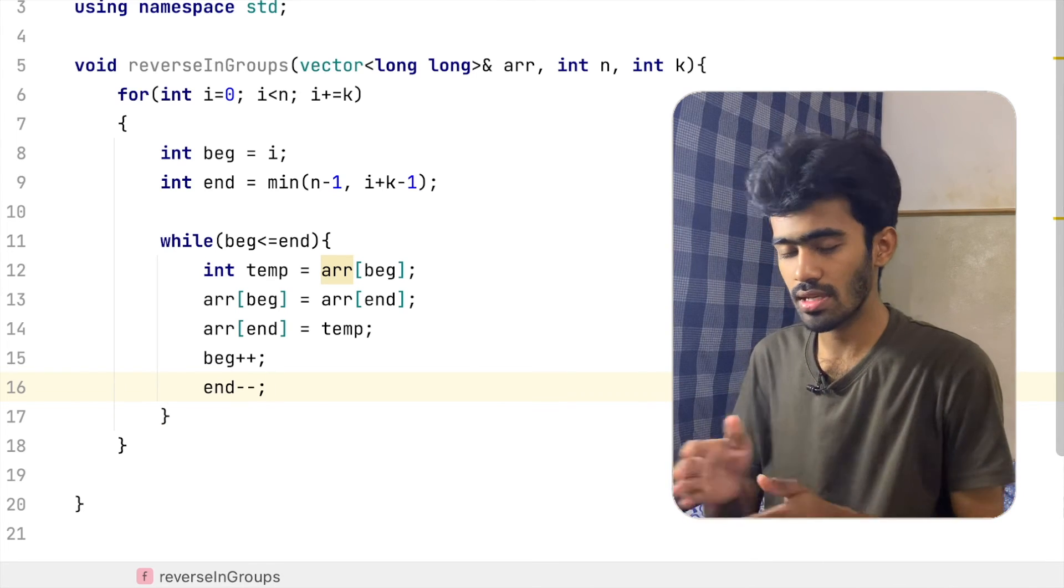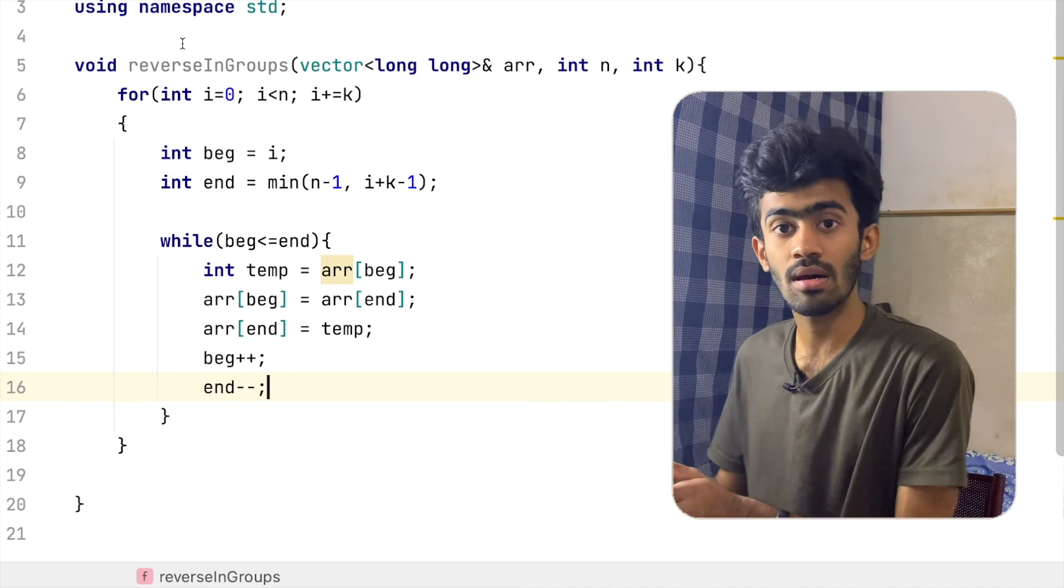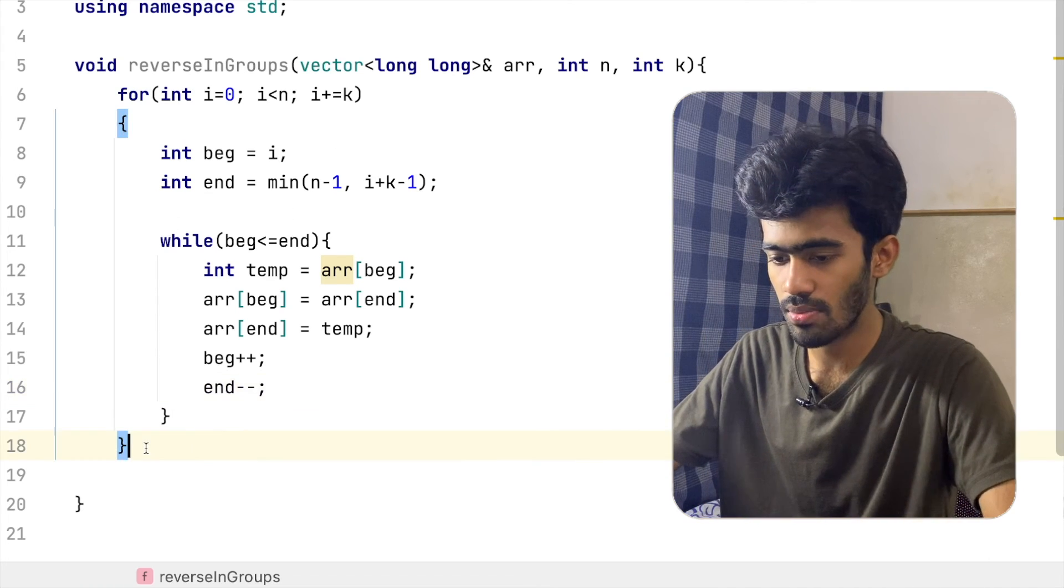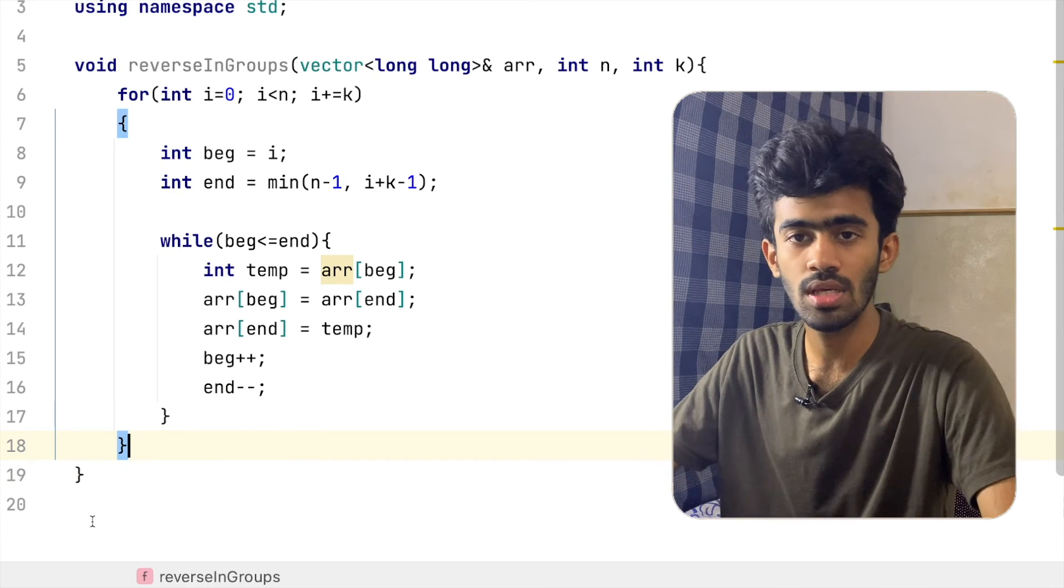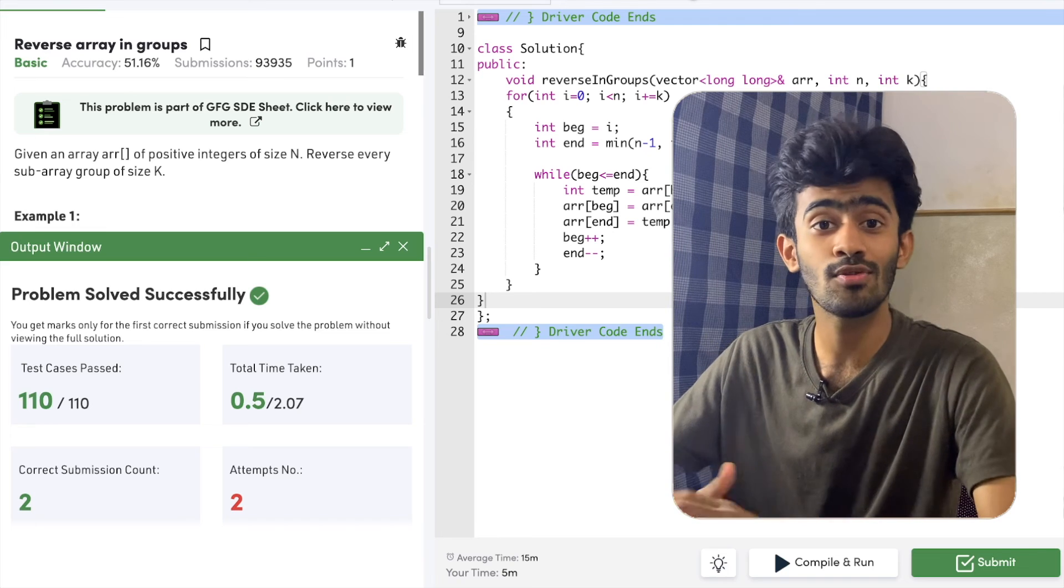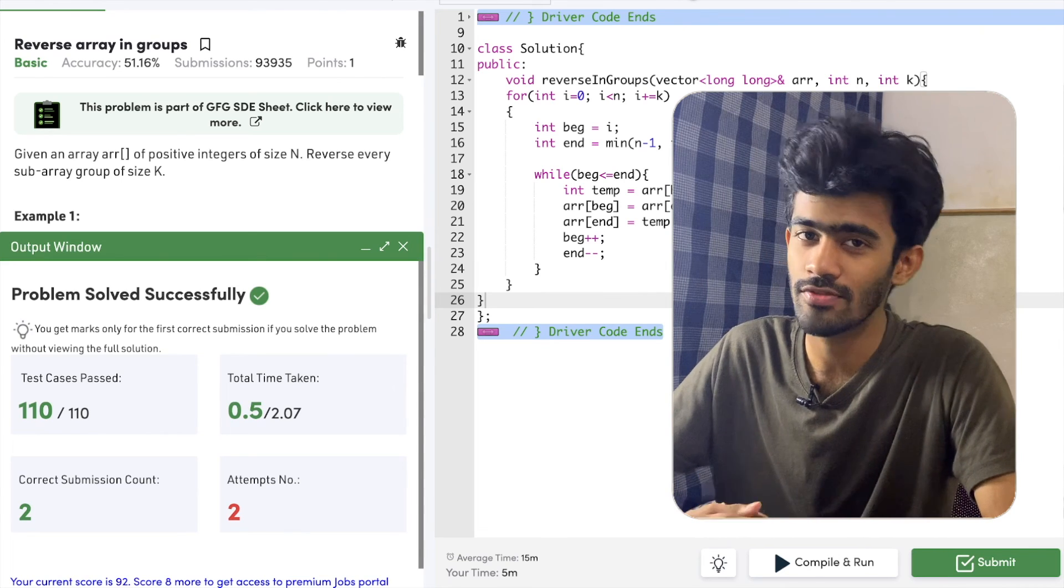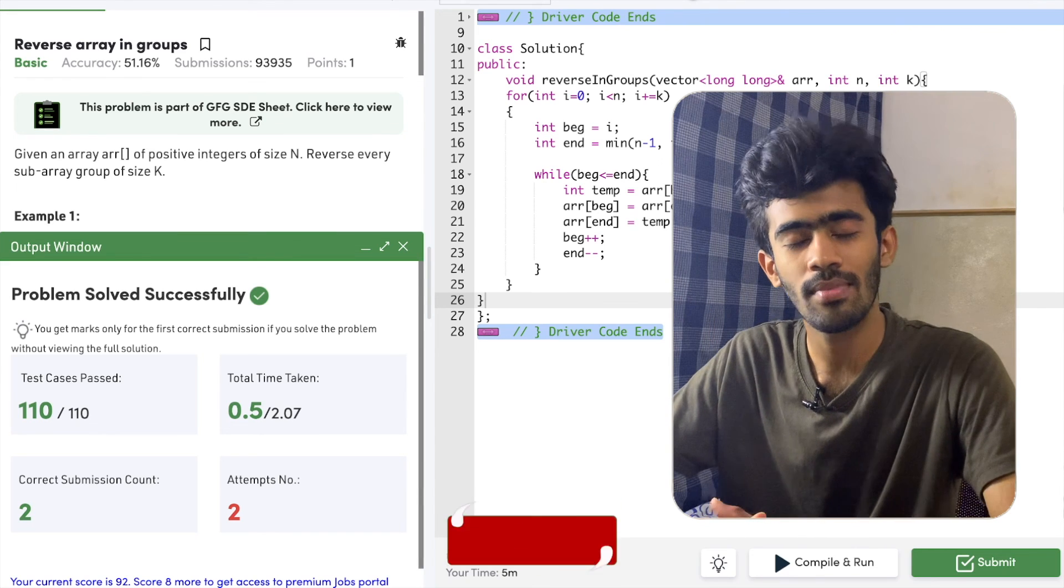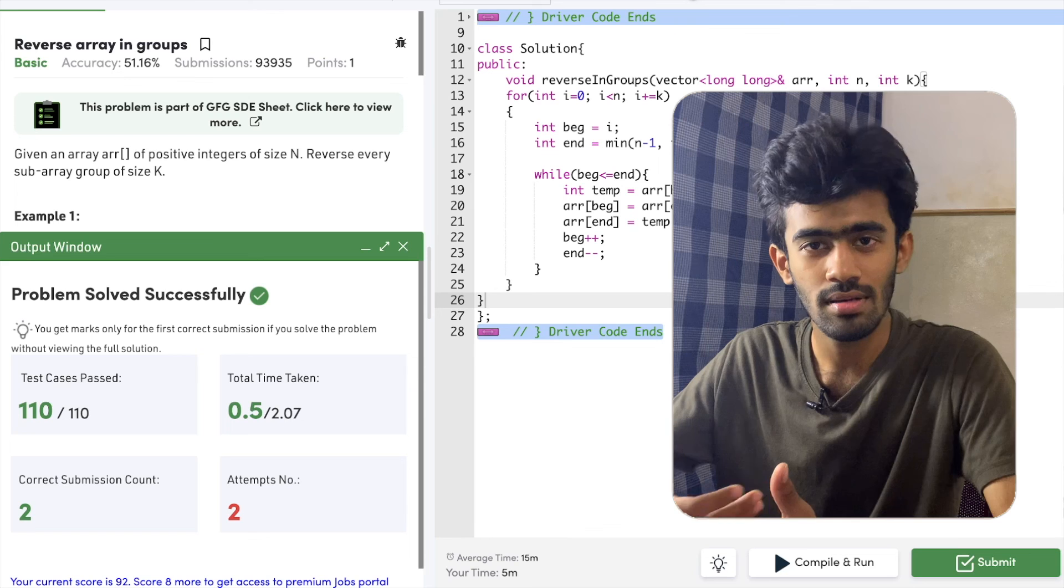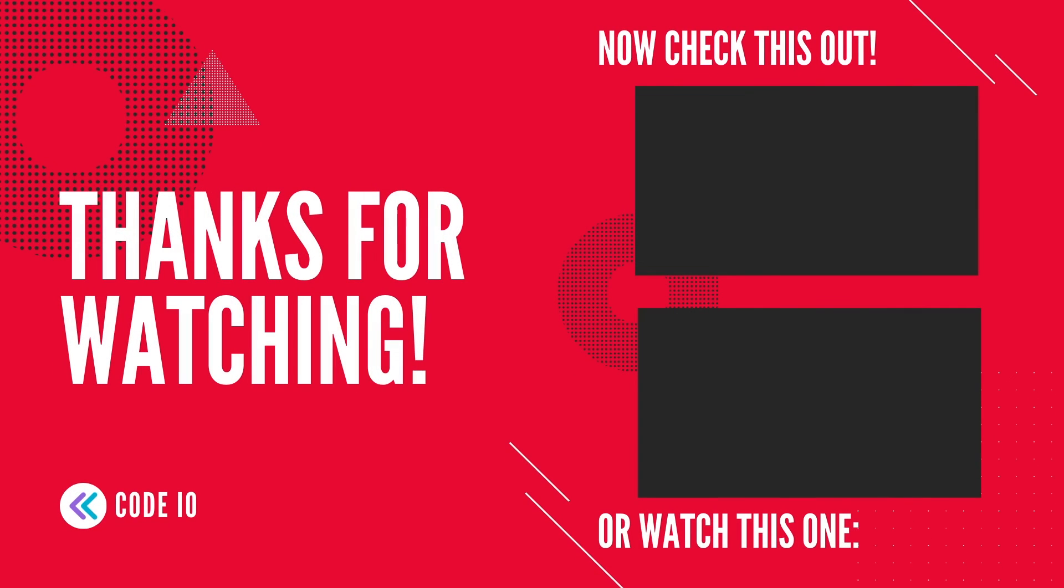We will reverse the iteration until beginning crosses end, then the while loop is false. So this is what we are doing. If we verify, congratulations, all 110 test cases passed. This is the reverse array in groups GeeksforGeeks problem solving question. If you liked this video, please like, comment and subscribe. See you in the next episode of our problem solving series. Until then, bye bye.